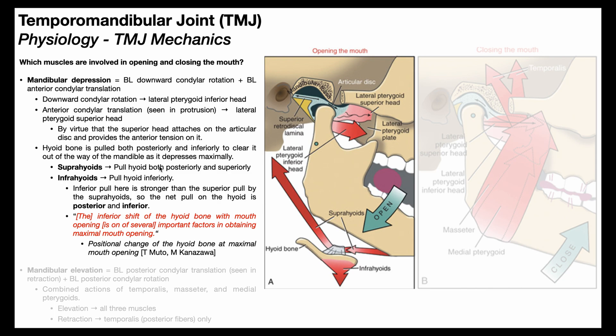During mouth opening, the hyoid bone also moves. It's going to be pulled both posteriorly and inferiorly to clear it out of the way of the mandible as it depresses maximally. If the hyoid bone stayed in place, the descending mandible would eventually crash into it. So the hyoid bone must get out of the way, and there are two sets of muscles involved in this: the suprahyoids and the infrahyoids.